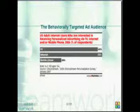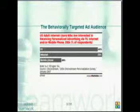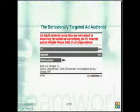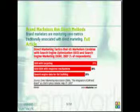The behaviorally targeted audience consists of adult internet users who are interested in receiving personalized advertising. The internet accounts for about 70%, with mobile phones moving up as well — so consider what medium you're using when sending out personalized advertising. Direct marketing tactics that US marketers combine with search engine optimization include SEO with targeting to specific markets, and SEO and SEM with response mechanisms. You want to make sure you're combining SEO and SEM with targeted advertising or marketing tactics to specific parts of the market.